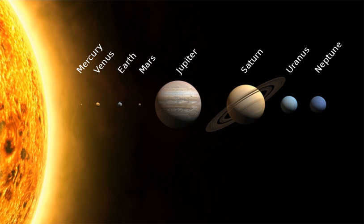Section 2: Structure and Composition. The principal component of the solar system is the Sun, a G2 main-sequence star that contains 99.86% of the system's known mass and dominates it gravitationally. The Sun's four largest orbiting bodies, the giant planets, account for 99% of the remaining mass, with Jupiter and Saturn together comprising more than 90%. The remaining objects of the solar system, including the four terrestrial planets, the dwarf planets, moons, asteroids and comets, together comprise less than 0.002% of the solar system's total mass.